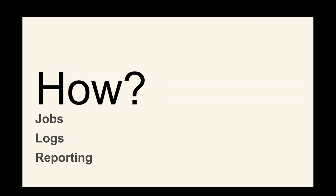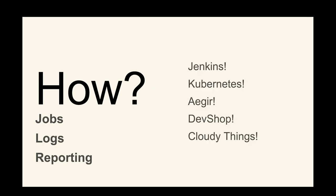I broke it down: jobs, logs, and reporting — it's basically almost everything ops. Jenkins needs to run stuff, report that stuff, and save logs. Lots of different things do that. The whole CI provider ecosystem is a very thorough ecosystem of things achieving this goal, and they've been doing it for a long time.